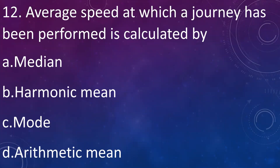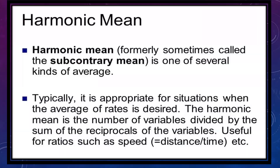The average speed at which a journey has been performed is calculated by: A: median, B: harmonic mean, C: mode, D: arithmetic mean. Answer is B: harmonic mean. To calculate average speed, we use harmonic mean. Harmonic mean is the number of variables divided by the sum of the reciprocals of those variables — that is, it is the reciprocal of the arithmetic mean. Harmonic mean is used to calculate ratios such as speed.